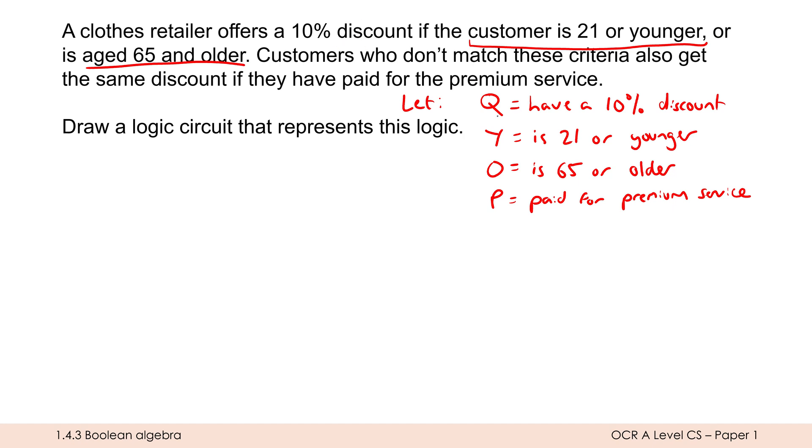So now I've assigned my Boolean variables. I can start to actually think about, well, what operators connect up these different letters? Well, Q is our output. So it's always going to go on our right-hand side. And my inputs here are Y, O, and P. So how are these combined together to give us the output?